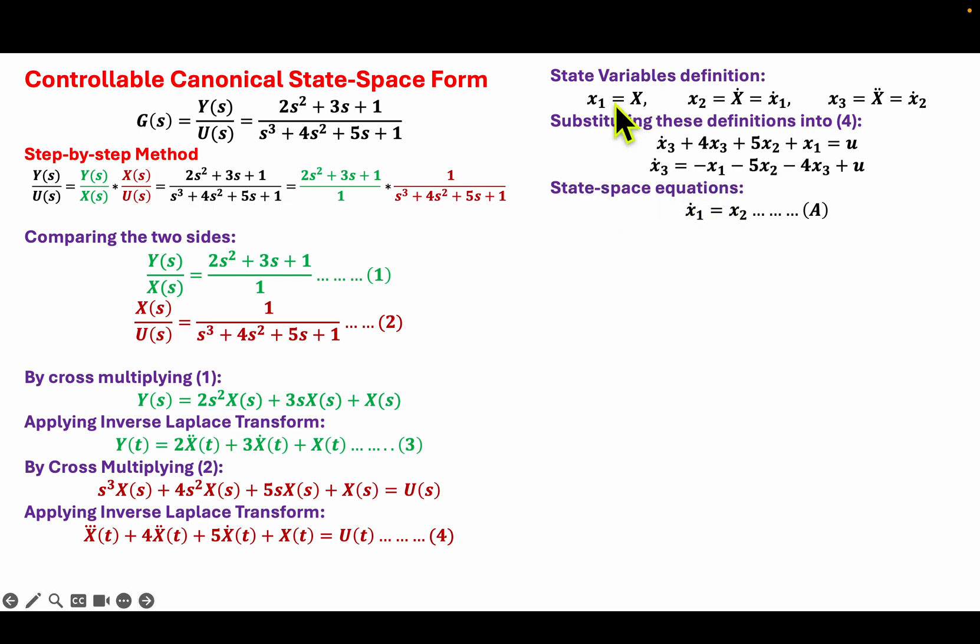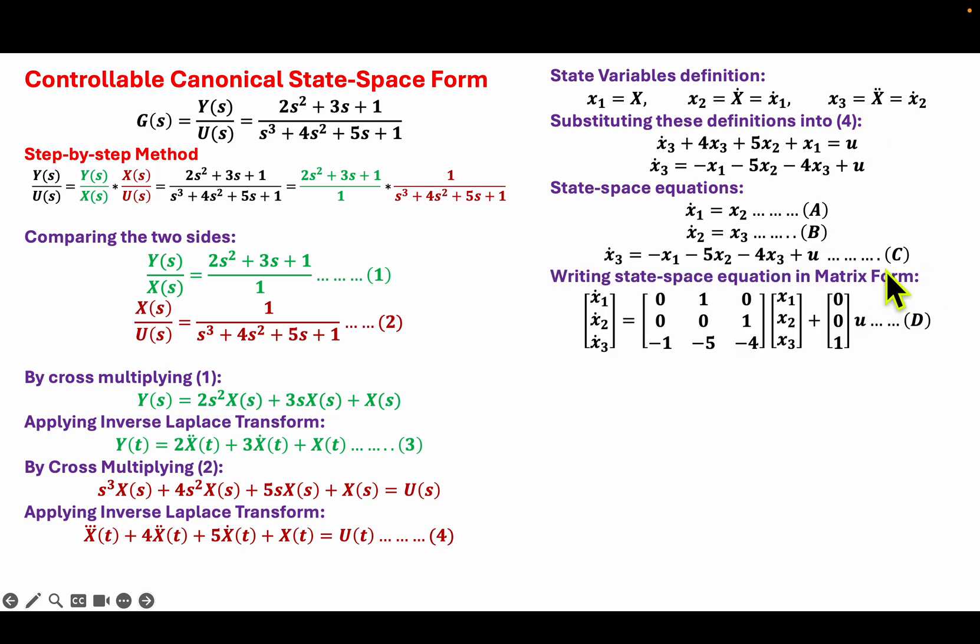So from my state-space definition, which is this definition, as well as x3 dot, I will have my state-space equations. x1 dot is equal to x2 as you can see from here. And x2 dot is x3 from here. And I will have my x3 dot. So writing this state-space equation in matrix form, I will end up with equation D.